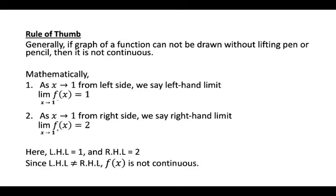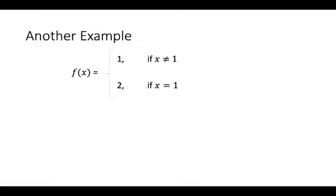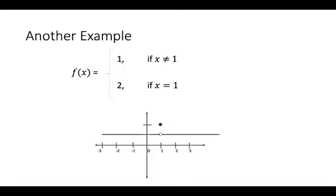But if left hand limit equals right hand limit, what can we say about the function? Let us take one more example: f(x) = 1 if x ≠ 1, and f(x) = 2 if x = 1. Draw the graph of this function. Again, can you draw the graph without lifting the pen? No. So f(x) is not continuous, as we cannot draw the graph without lifting the pen.